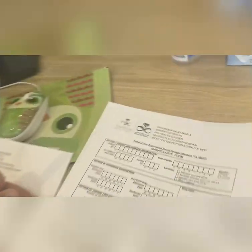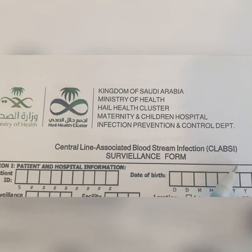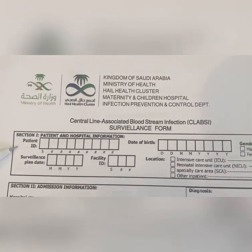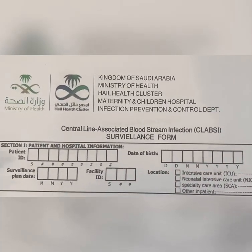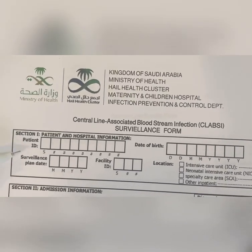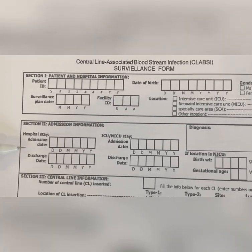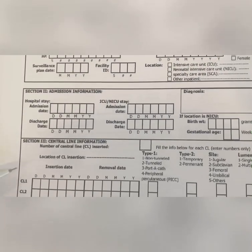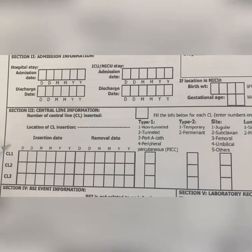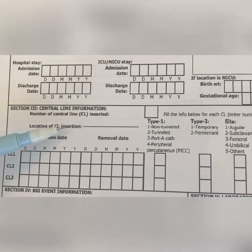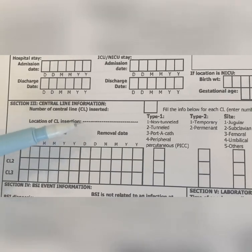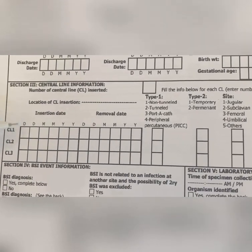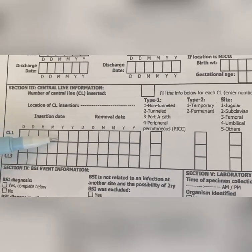We also have the Central Line-Associated Bloodstream Infection Surveillance Form. Fill in the demographic data in section one — patient and hospital information. Section two: admission information, hospital stay, and discharge date. Section three: central line information — location of central line insertion, whether umbilical or jugular, insertion date (day, month, year), and removal date.